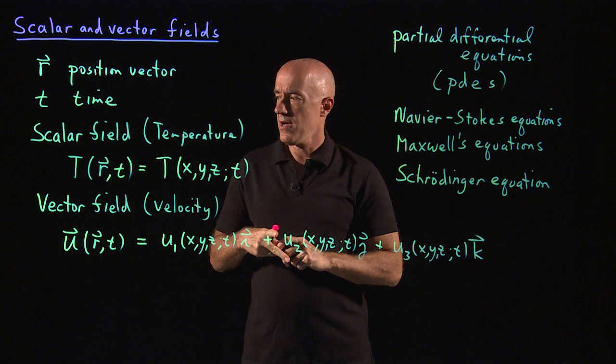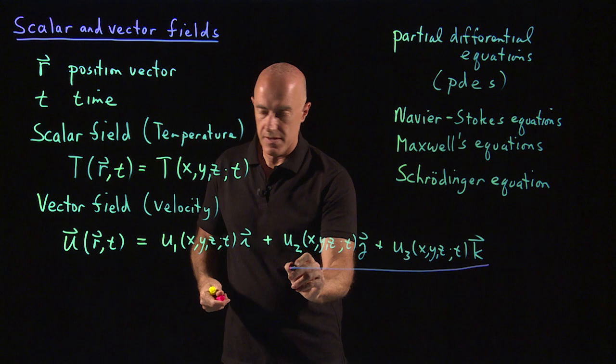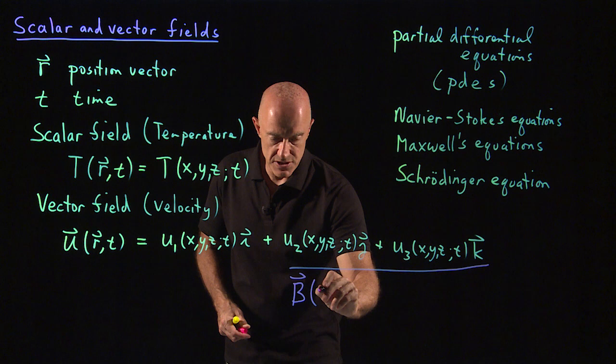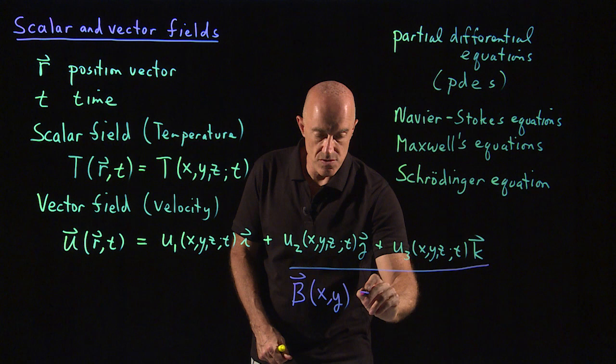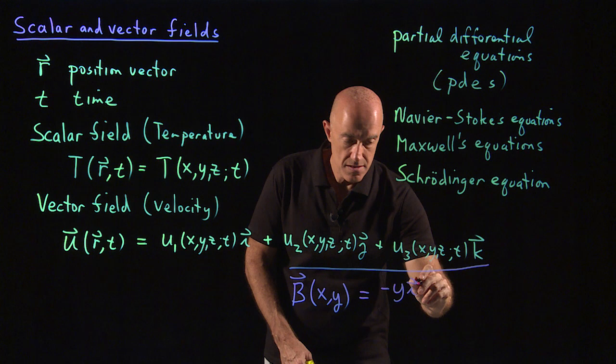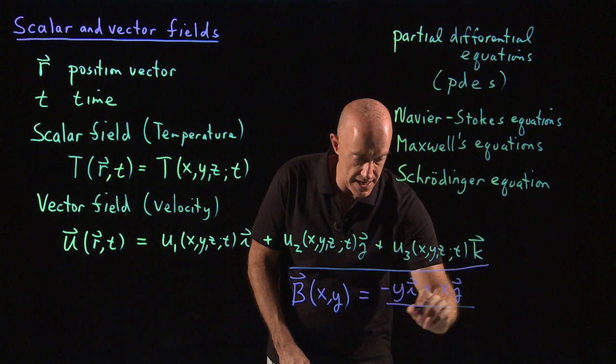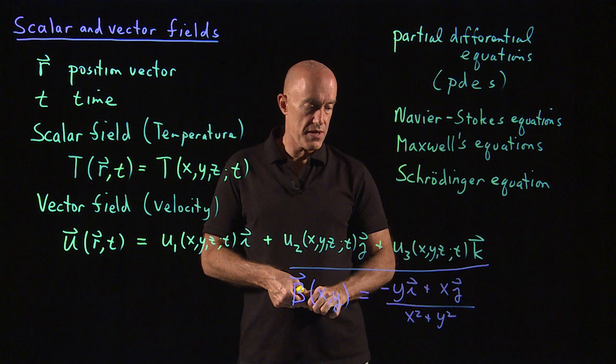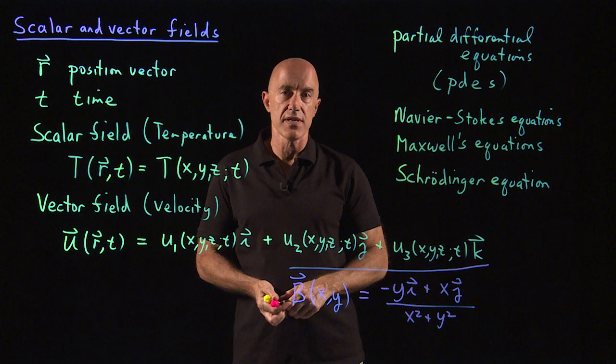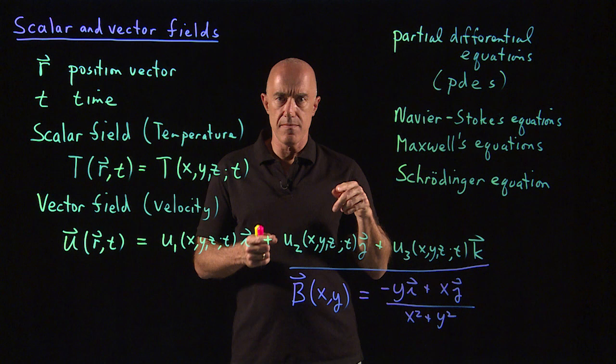Let me give you now an example of a vector field. Let's write down a vector field, B, which is a function of only two coordinates, x and y. So we're in the xy-plane. The position vector is two-dimensional. And I will write that as minus y times i plus x times j divided by x squared plus y squared. So this is a vector field. It's only a two-dimensional vector field, but it is a vector field.